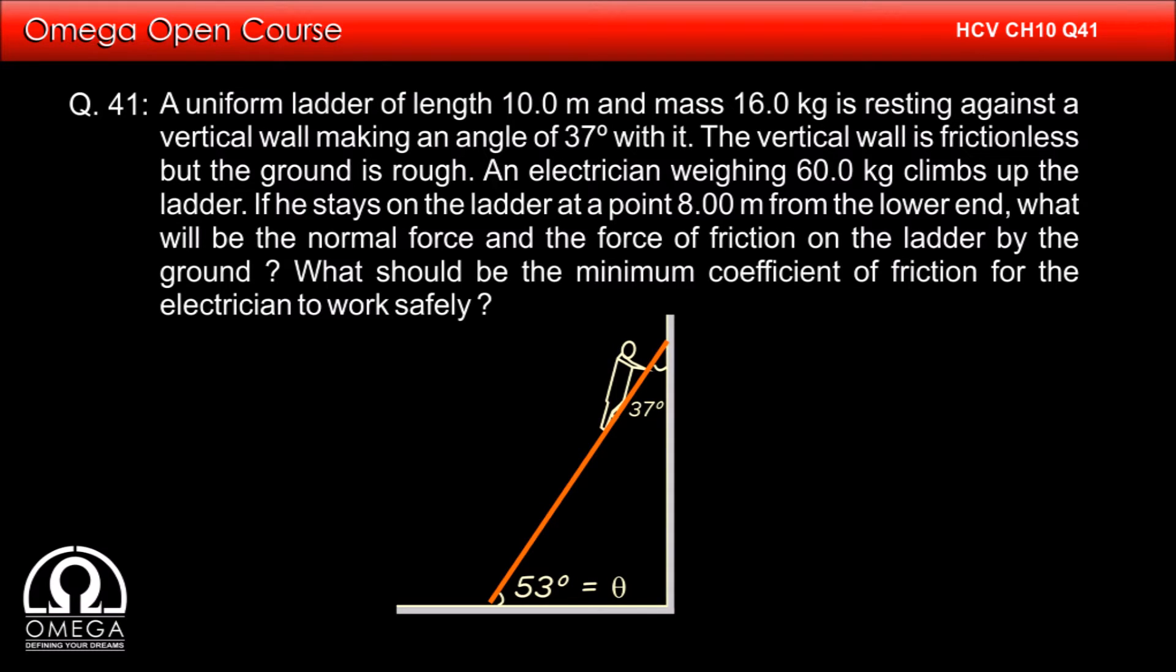A uniform ladder of length 10 meters and mass 16 kg is resting against a vertical wall making an angle of 37 degrees with it. The vertical wall is frictionless but the ground is rough.